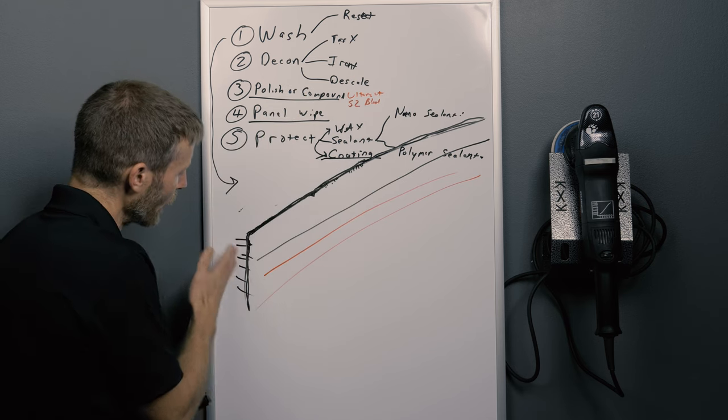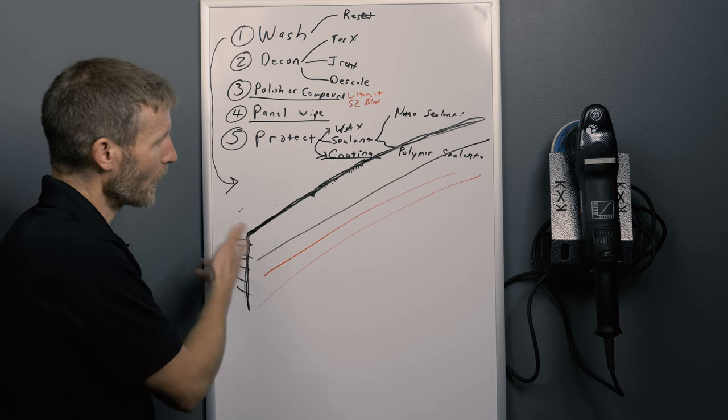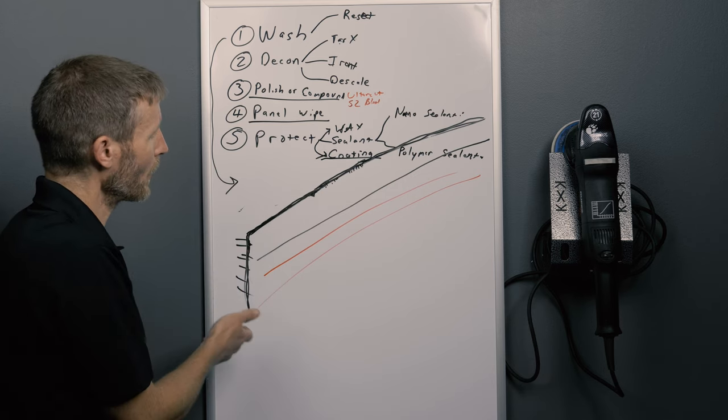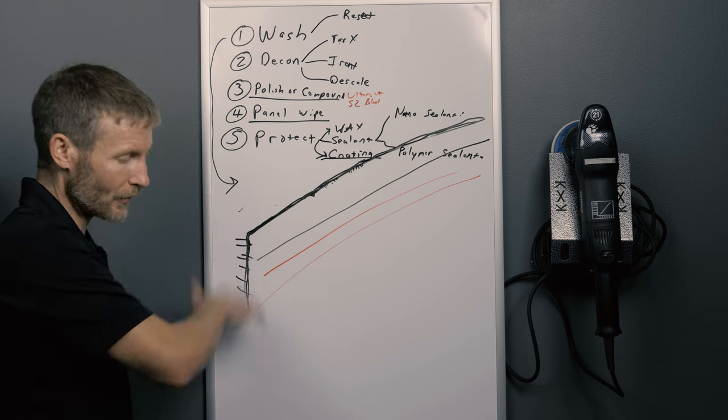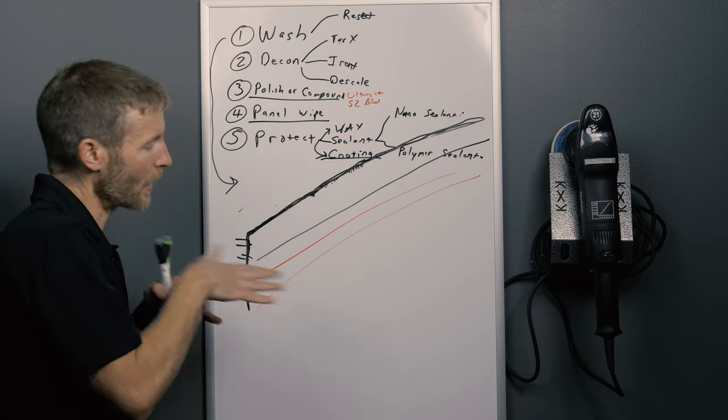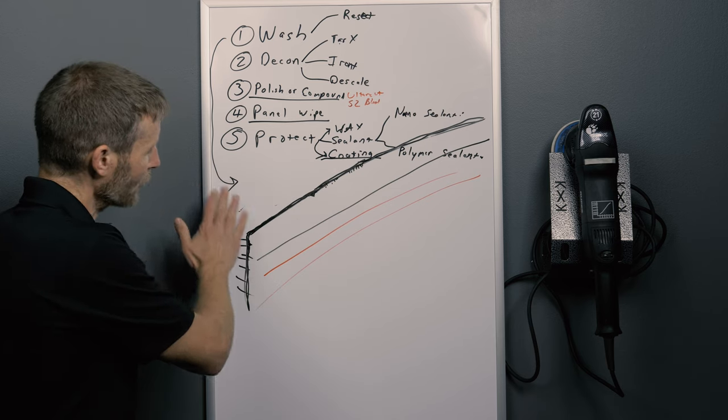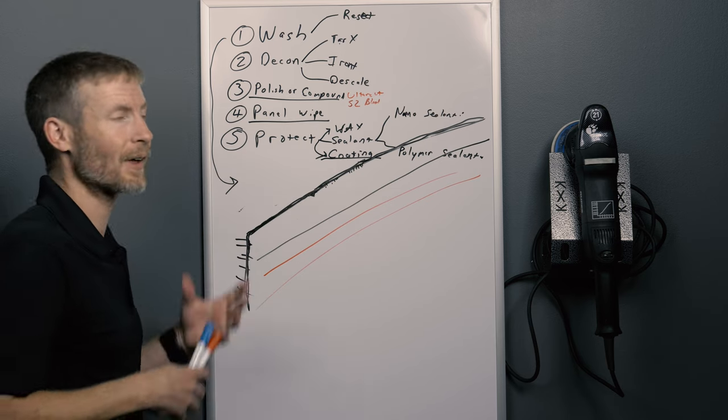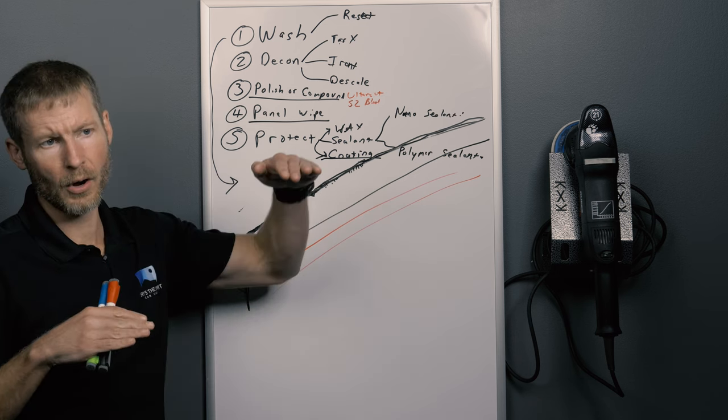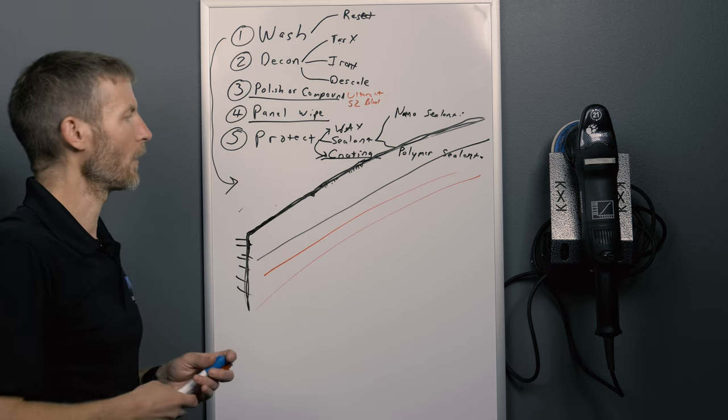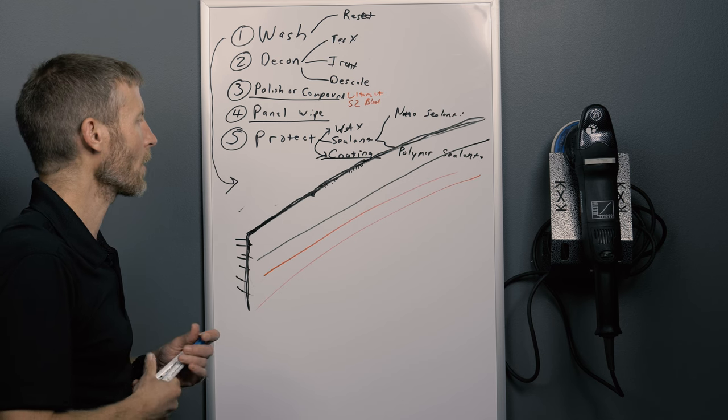So now when we have, if we do leave something on there too long and we do get a little etching or something, then it's going to be in this layer of ceramic coating instead of going further into our clear coat, hopefully. Regardless of that, the most important part is that it's super easy to wash. So now we come along with the reset, and now I'm not sitting here trying to scrub at it, which is much more likely to put swirls in the surface. Now, I'm literally just spraying the reset on there or spraying some bug out on there if I left it on there for too long. But generally speaking, you're just going to rinse it off. A ton of it's going to just come right off because the ceramic coating lets everything slide off real easy. And then after that, when you take your wash mitt with your reset and go over that, that's just going to pull the rest of it right off.